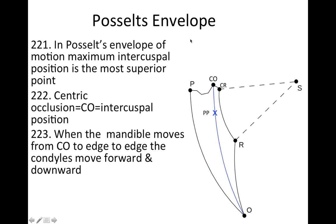We're going to do this famous guy's envelope. In Posselt's envelope of motion, the maximum intercuspal position is the most superior point — you can see that here. Centric occlusion equals intercuspal position. When the mandible moves from CO to edge-to-edge, the condyle moves forward and downward. We went through that already, but I wanted to put that in this category with the envelope.